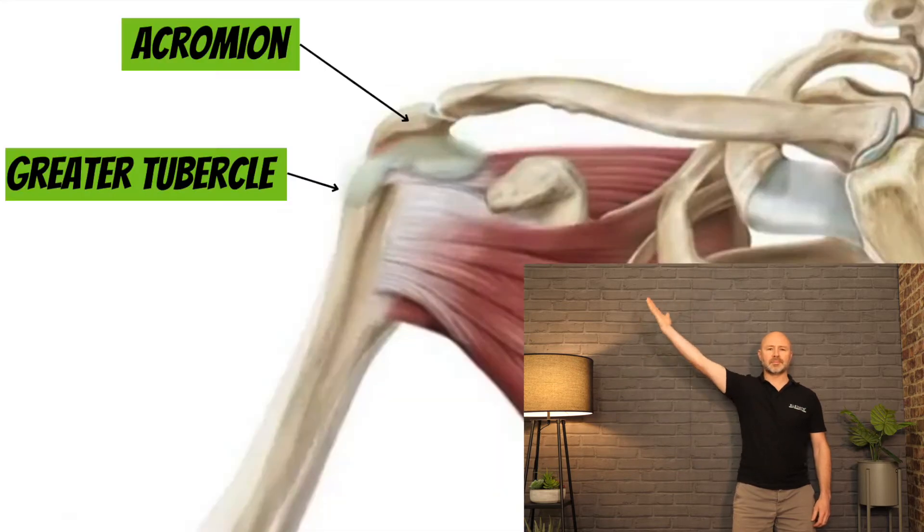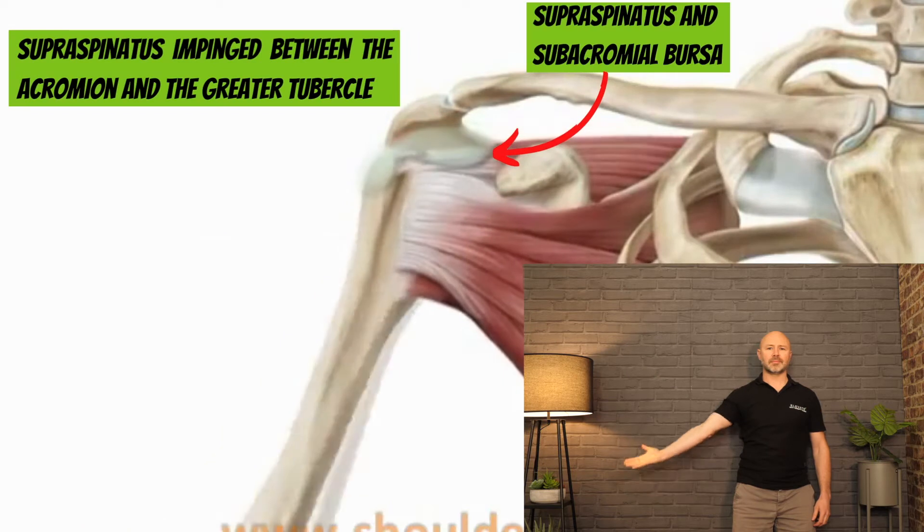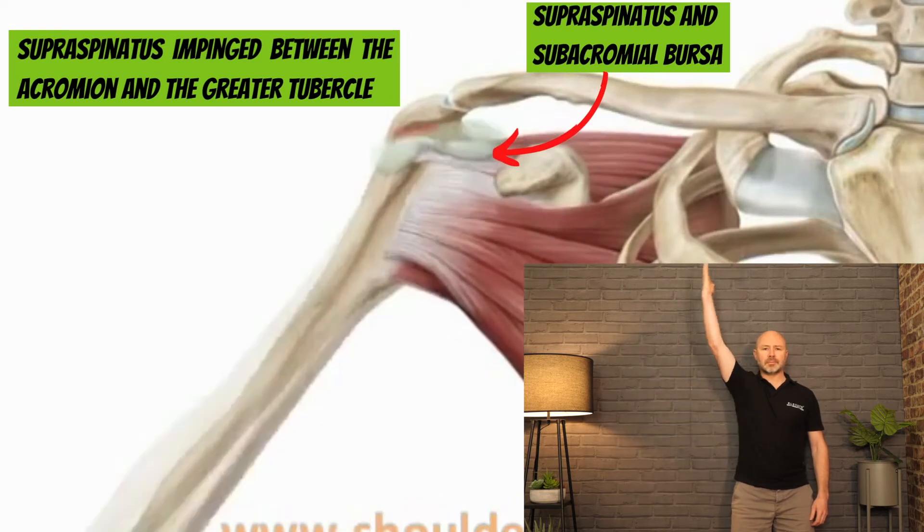Today's case: a client with right shoulder pain that's been ongoing for about three or four months. They came in previously and it was getting sore. We noticed it was very difficult to bring the arm up into abduction above the head with the palm facing down, but much easier with the palm facing up — pointing to some kind of impingement of the supraspinatus between the greater tubercle and the acromion.